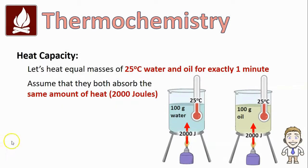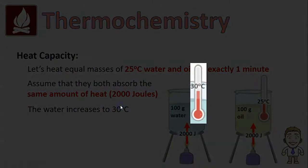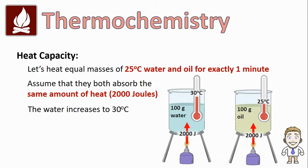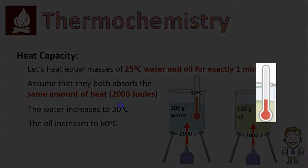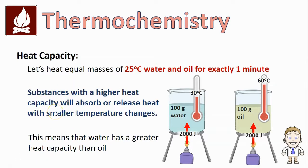Just like we saw in our beach scene with sand and water, the water and the oil are going to have very different temperature changes even though they both got the same 2,000 joules. The water's temperature increases to 30°C — an increase of only five degrees. The oil increases all the way to 60°C — a much larger temperature increase. This means that the water has a much greater capacity to absorb heat than the oil, or a greater heat capacity than the oil.